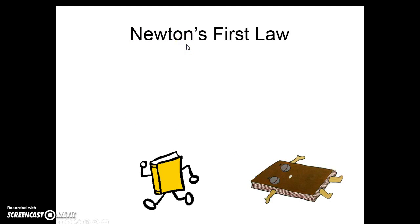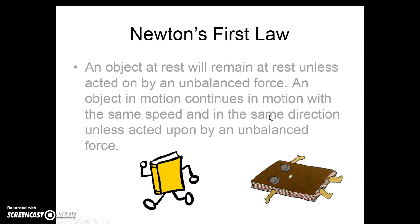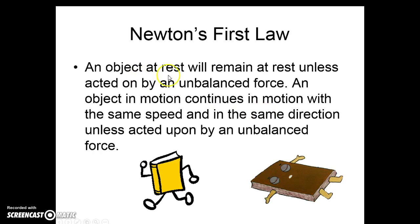Now that we understand force and balanced force, this brings us to the first law — one of three. This is your entry to Newton's laws. An object at rest will remain at rest, unless acted on by an unbalanced force. It's going to stay still unless you apply a force strong enough to move it. An object in motion continues in motion with the same speed and in the same direction, unless acted upon by an unbalanced force. If it's moving, it's going to keep moving until you apply a force to stop it. If it's still, it's going to stay still until you apply a force to make it go.